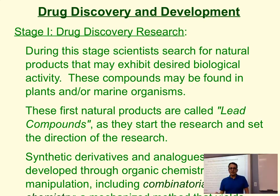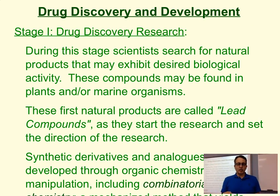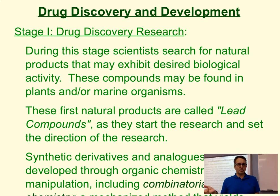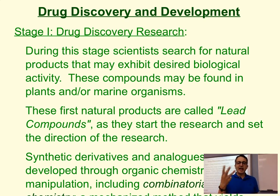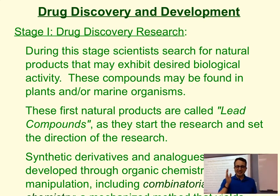Drugs are normally discovered by the search of a natural product that has some type of biological activity. There are people constantly looking through plants and sometimes marine organisms — this happens a lot in Japan — where they take different substances, purify them, and then test them. Those first natural products are called lead compounds because they set the direction in which we are going to be looking for the structure of a chemical compound.